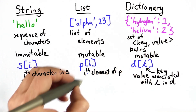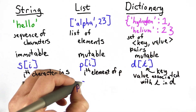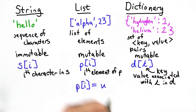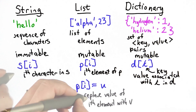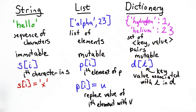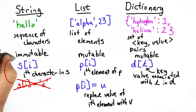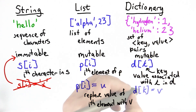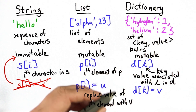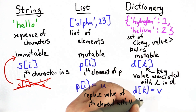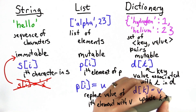We can also use our indexing in assignments. We saw with a list, we could do p[i] = value, which replaces the value of the i-th element of p. With a string, we can't do that — it produces an error, because strings are immutable, so there's no way to modify characters in a string. With a dictionary, we can. The meaning of d[k] = v is very similar to the update operation in our hash table — it's equivalent to updating the value associated with k to be v.